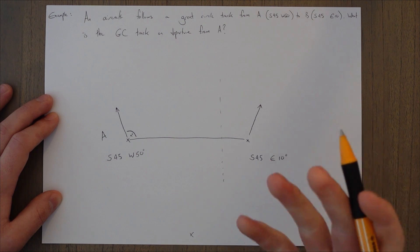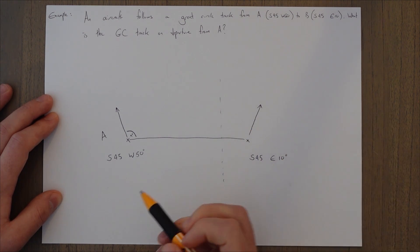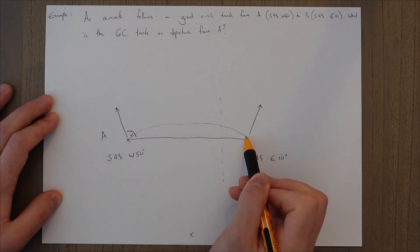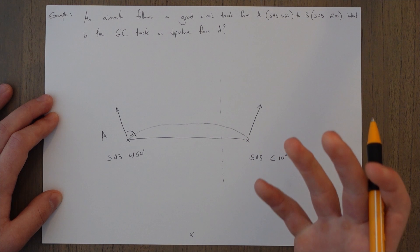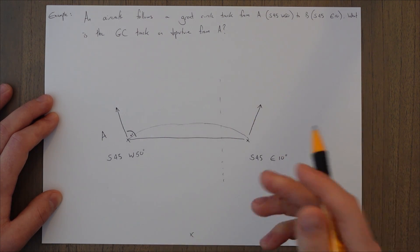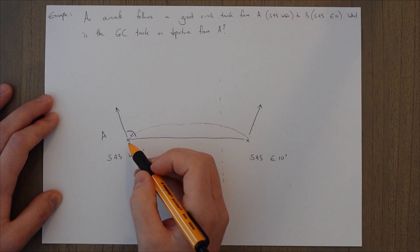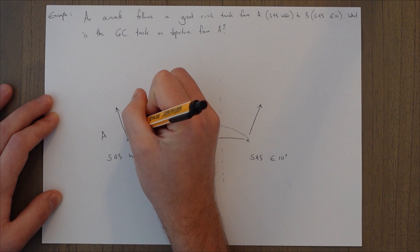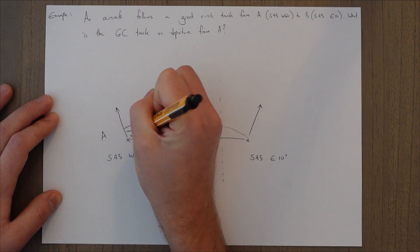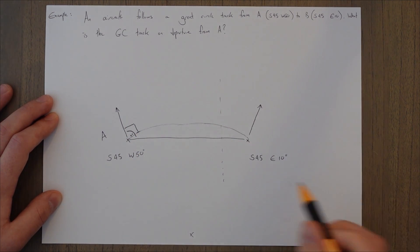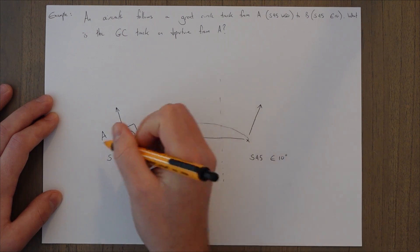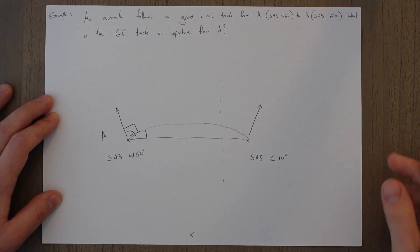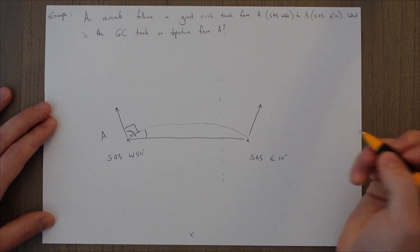It initially looks like we don't have enough information to find the great circle track, but we do — because if we follow a line of latitude, that's a rhumb line. So we can draw in our rhumb line. Following a line of latitude means the track will be either 090 or 270 degrees. In this case, we're going from point A in the west to the east, so it's going to be 090 degrees. From that rhumb line, we can find the conversion angle and add it onto the rhumb line to find the value for the great circle.